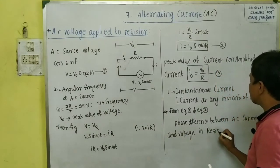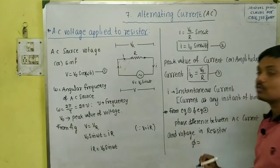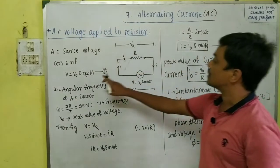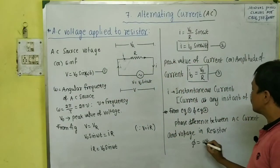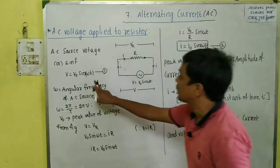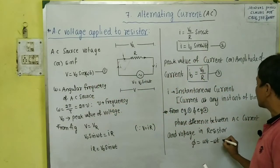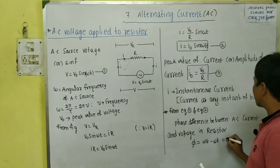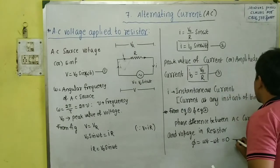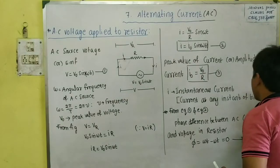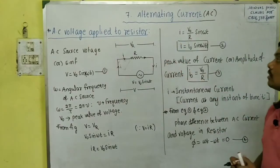What is the phase difference? Phase difference is denoted by φ. It equals the difference in angles of voltage and current. The voltage angle is ωt and the current angle is also ωt. So phase difference = ωt − ωt = 0. The phase difference is zero. This is an important point — phase difference is 0 in a resistor.